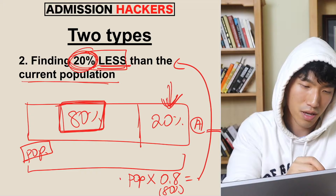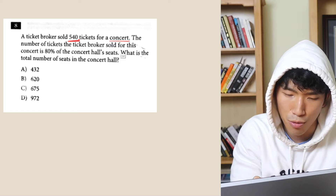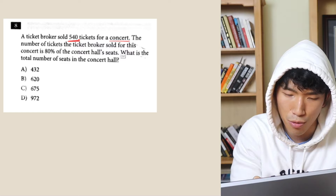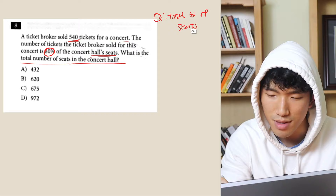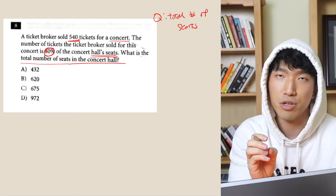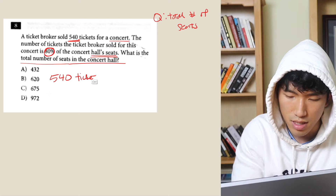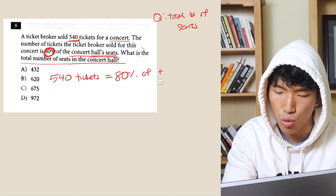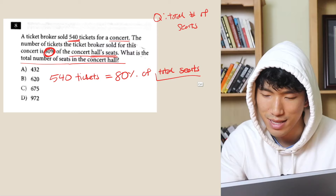Let's look at two examples from the actual SAT. The first one is about a ticket broker — pause the video, read the question, then play again. A ticket broker sold 540 tickets for a concert, and the number of tickets sold is 80% of the concert hall's seats. What is the total number of seats in the concert hall? So we're finding total seats, and we know 540 tickets equals 80% of total seats.